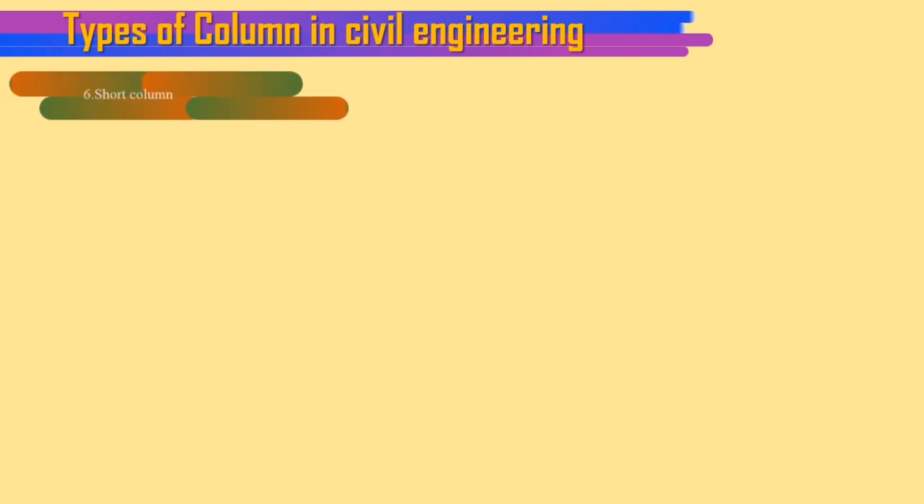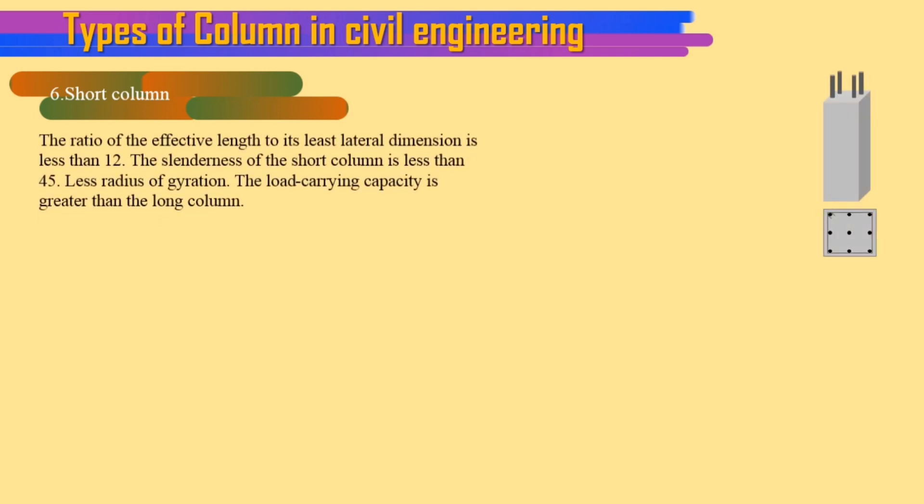6. Short column. The ratio of the effective length to its least lateral dimension is less than 12. The slenderness of the short column is less than 45. Less radius of gyration.